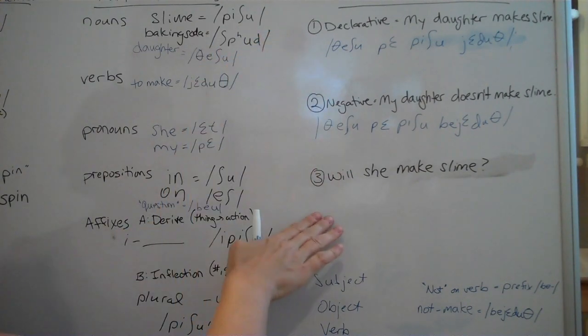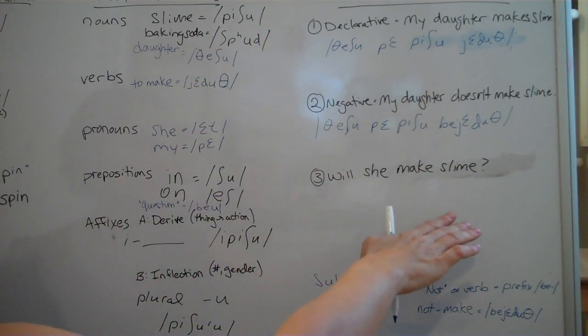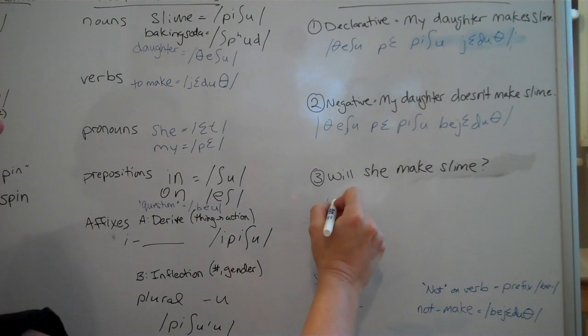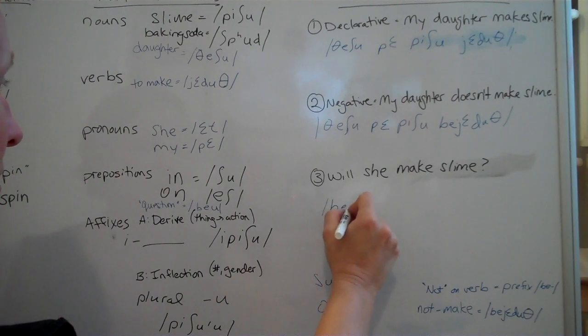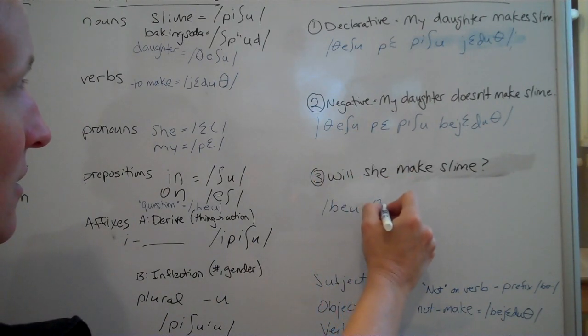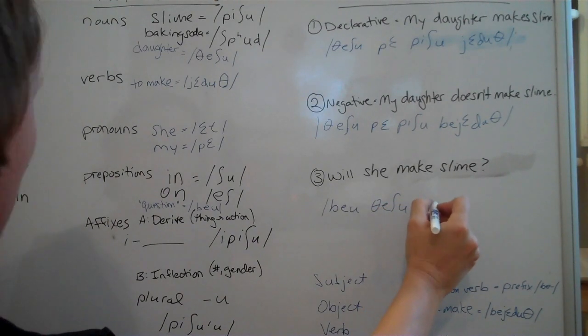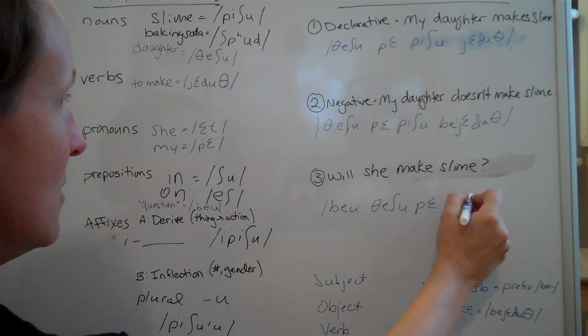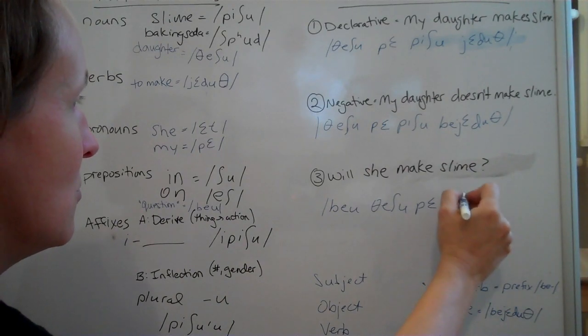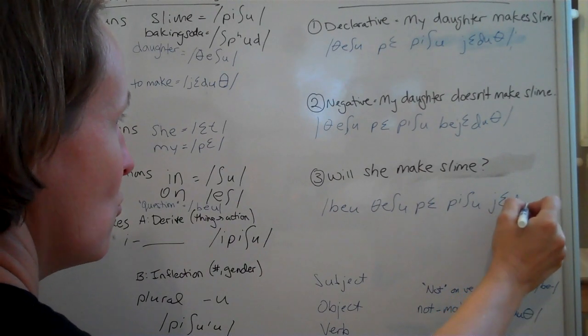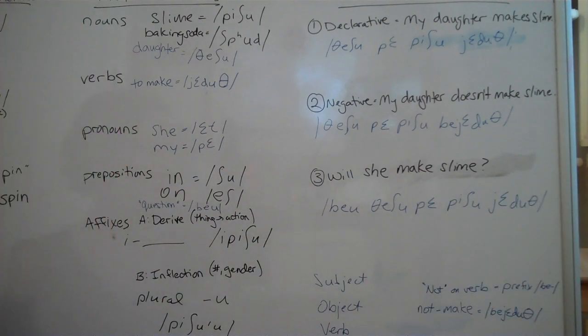And then I want to turn this into a question. Will she make slime? And I've created a preposition that is a general question. It can stand for any sort of questioning of any sort. And so, I'm going to start my sentence with Beyu, Beyu, Feishu, Pe, Peishu jeduth. And there's my question.